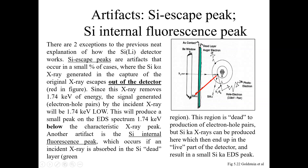The two exceptions are the artifacts known as silicon escape peaks and silicon internal fluorescence peaks. Escape peaks are artifacts that occur in a small percentage of cases where the silicon K-alpha x-rays generated upon capture of the original x-rays escape out of the detector — shown in red in the figure. Since these x-rays remove 1.74 kilo-electron-volts of energy, the signal generated by the incident x-ray will be 1.74 keV low, producing a small peak in the EDS spectrum 1.74 keV below the characteristic x-ray peak.